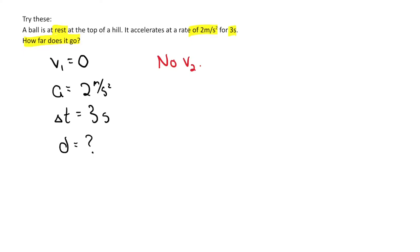So knowing that there's no v2, now we look for the equations. The equation without v2 is that d = v1*t + 1/2*a*t² equation. I don't have to rearrange it, I can just plug in numbers.